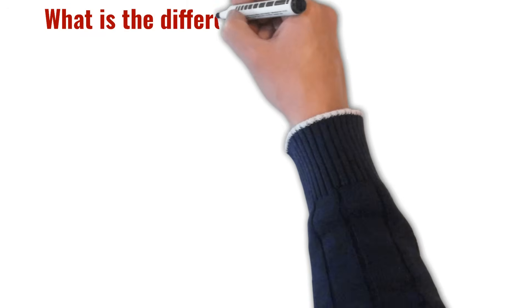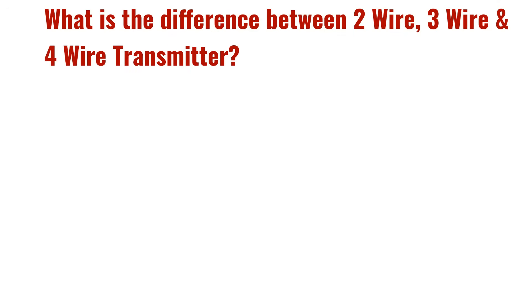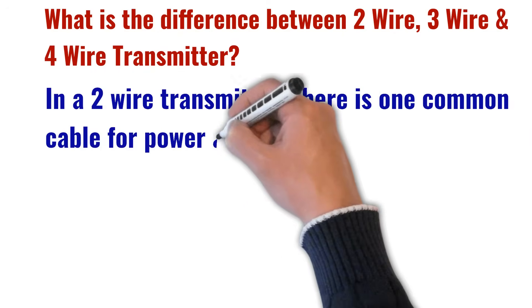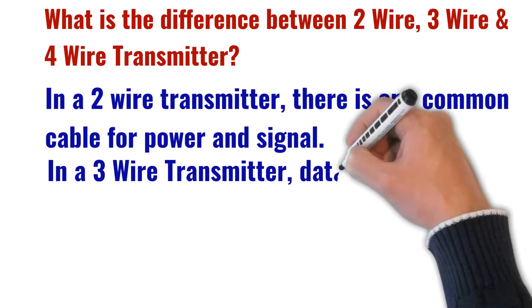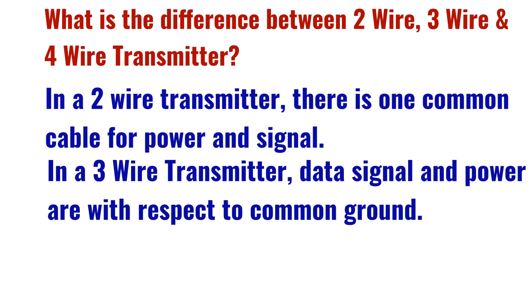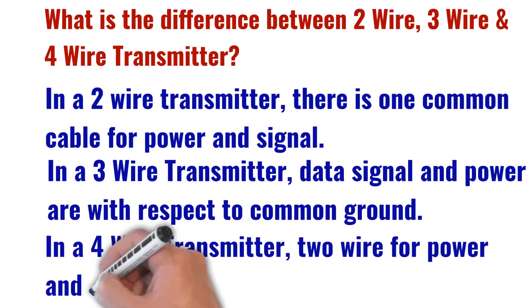The fifth most frequently asked interview question is: what is the difference between two-wire, three-wire, and four-wire transmitters? In a two-wire transmitter, there is one common cable for both power and signal. In a three-wire transmitter, data signal and power are with respect to a common ground. And in a four-wire transmitter, there are two separate wires for power and two separate wires for signals.